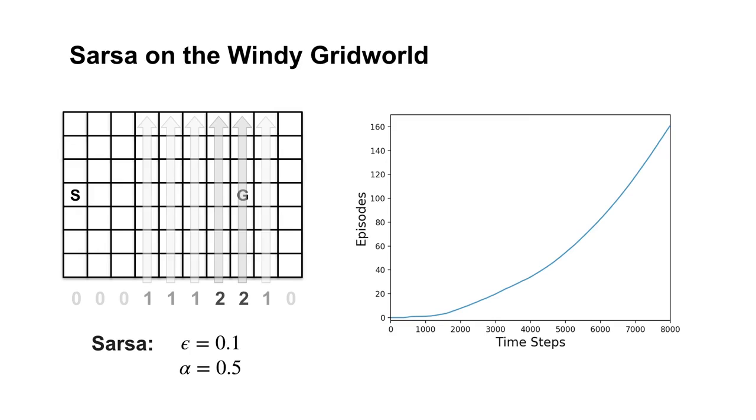Notice the episode completion rate stops increasing. This means the agent's policy hovers around the optimal policy, and won't be exactly optimal because of exploration.